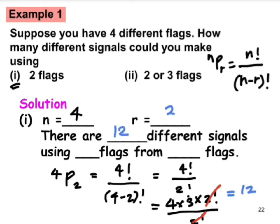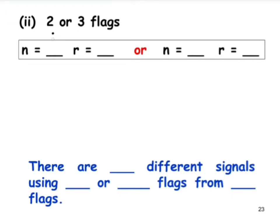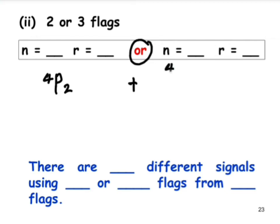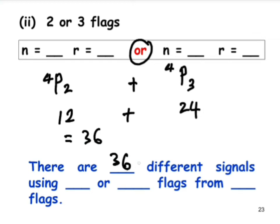For part two, two or three flags: when it is two flags we use 4P2, and 'or' means plus. When it is three flags we calculate 4P3. So 4P2 = 12 plus 4P3 = 24, giving a total of 36. There are 36 different signals using two or three flags from four flags.